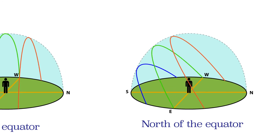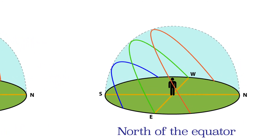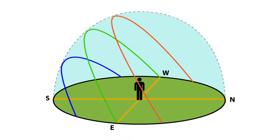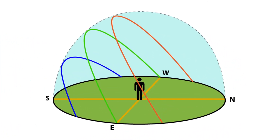We'll ignore the location at the equator and focus on our location to the north. The Sun will be at the highest in the sky in the middle of summer and shadows will be closest to under the object casting the shadow. In the middle of winter the Sun will always come from a lower angle and shadows will stretch away from an object.